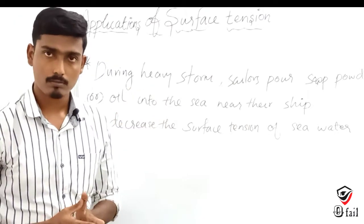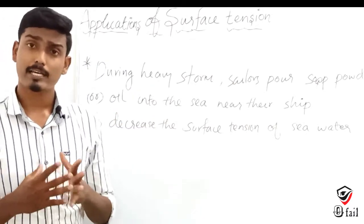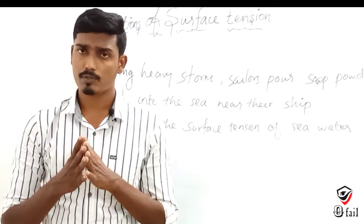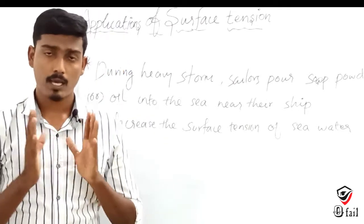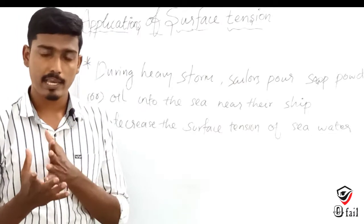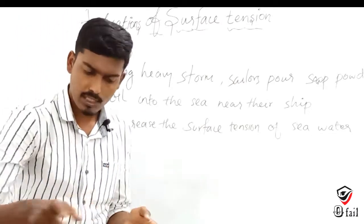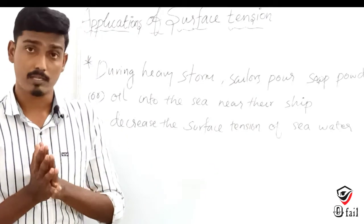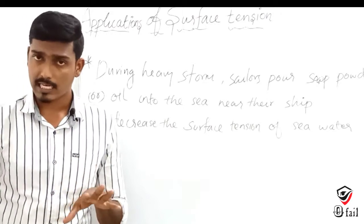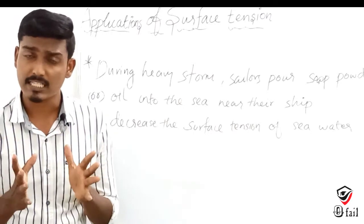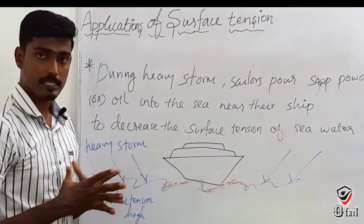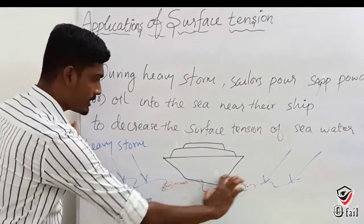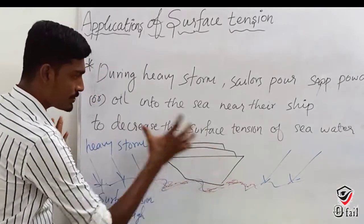The last application is what we see with ships. When a ship travels on sea water, the sea water surface has surface tension. The ship is able to float because the surface tension of the sea water supports it.